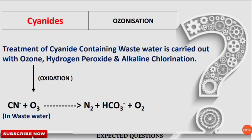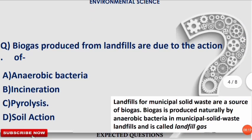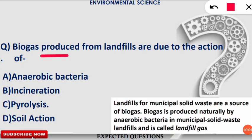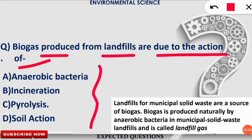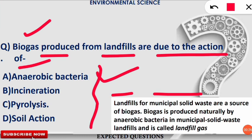Now the next question: the biogas produced from landfill sites is due to the action of which of the following? The correct answer is option A — anaerobic bacteria. Anaerobic bacteria produce biogas from the landfill. Landfills are municipal solid waste dumping sites where garbage from households, kitchens, gardens, and schools is disposed of in a secure and safe place arranged by the municipality. They are a source of biogas because anaerobic bacteria convert the municipal solid waste into various gases known as biogas, which is a source of methane usable as fuel.